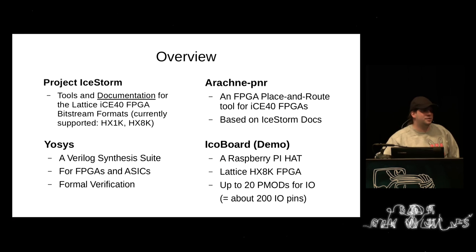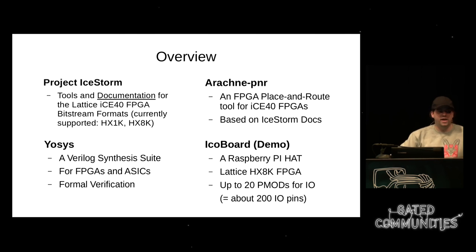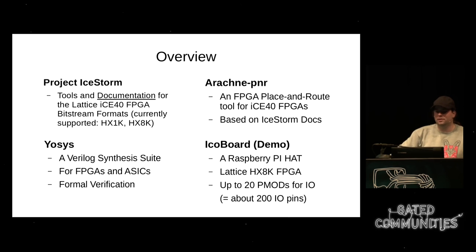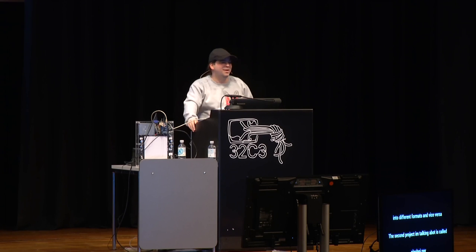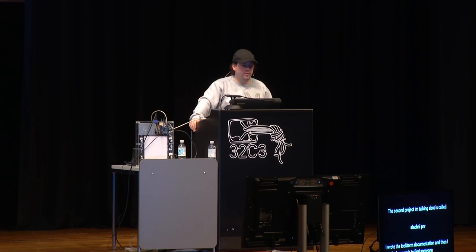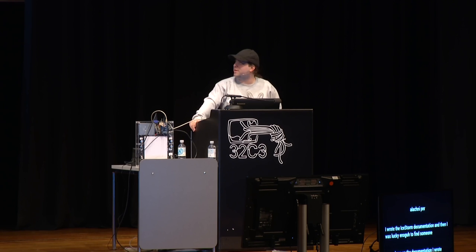The second project is Arachne-PNR. Arachne-PNR is a place and route tool for the iCE40 FPGAs, based on the IceStorm documentation. I wrote the IceStorm documentation, and then I was lucky enough to find someone — Clifford's collaborator — to write this Arachne-PNR place and route tool based on that documentation.